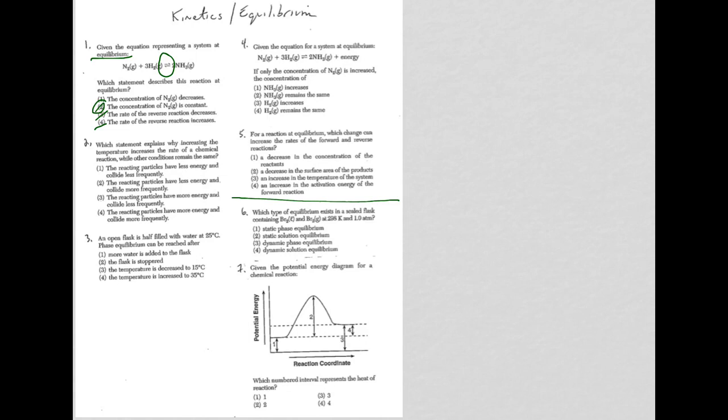So question 2, it's asking us what happens or explain why the increase in temperature increases the rate of a chemical reaction. Well, not only do the particles have more energy, but they're going to collide more frequently because they have that energy.